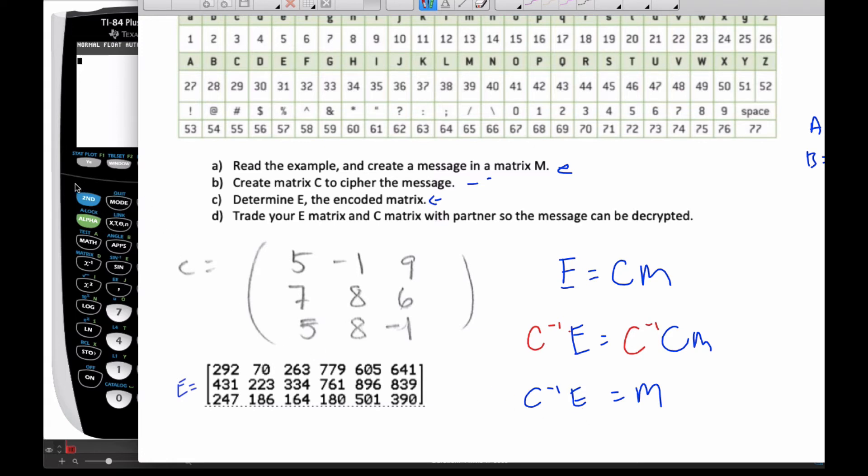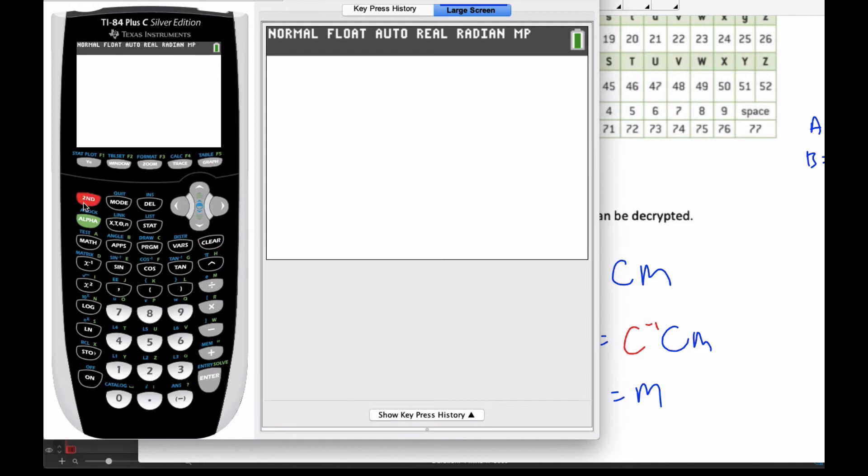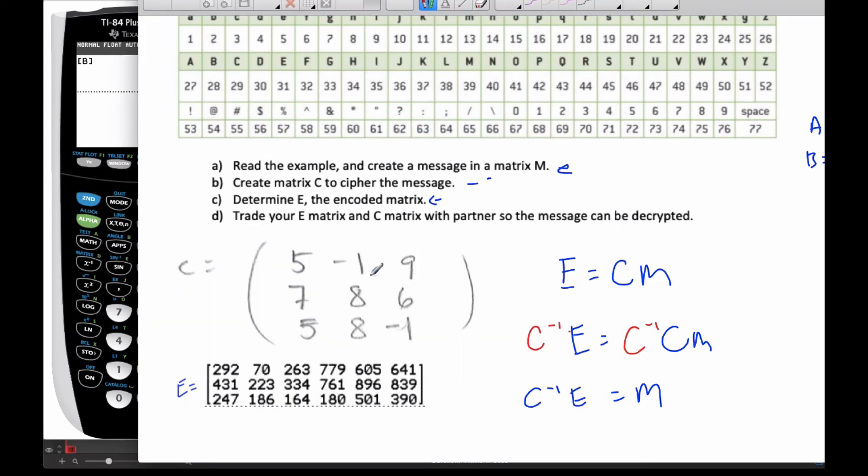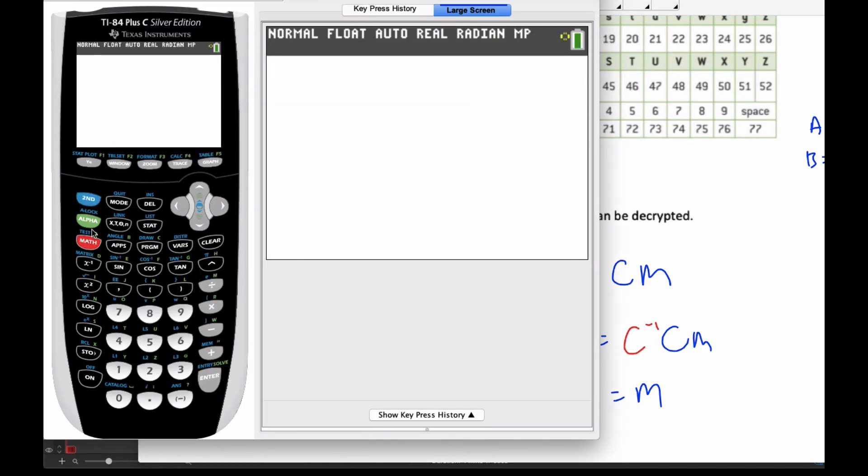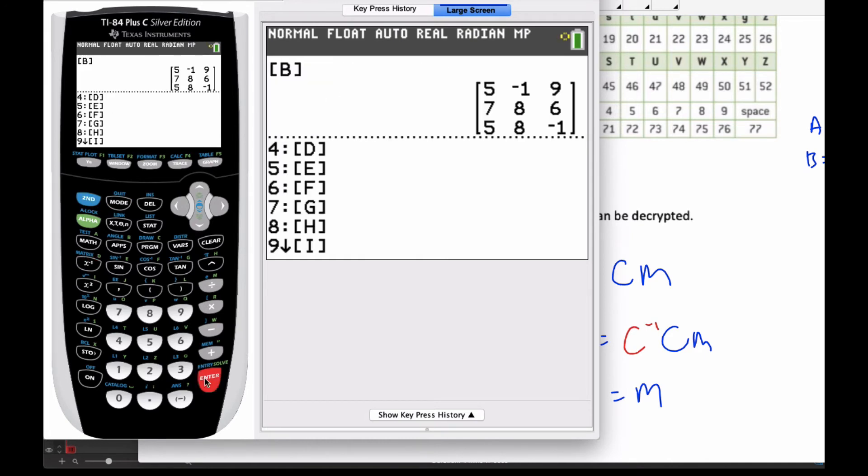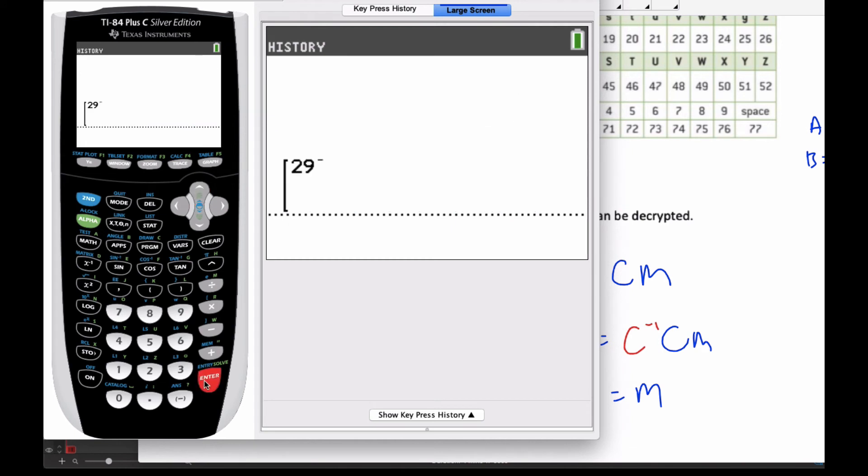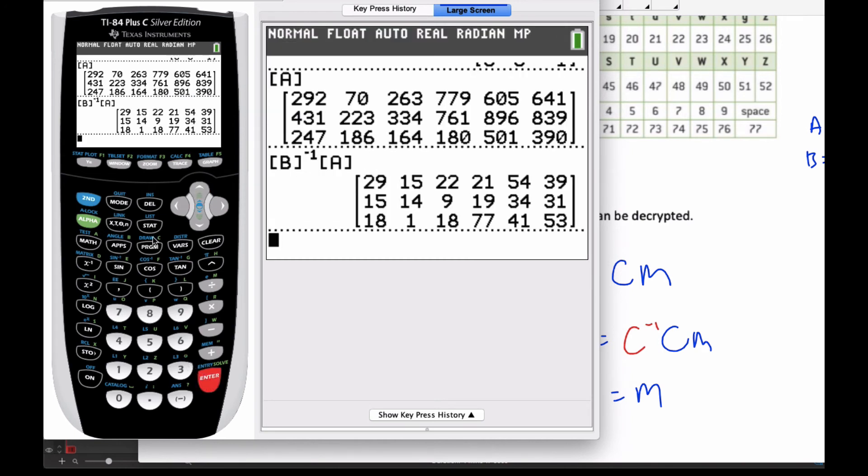If I go to my calculator here, I've already taken the liberty to put in my matrix. In B is my cipher, and you can see that's my cipher there. And in matrix A is my encoded matrix. So now in order to do it, I'm going to go to matrix C, inverse it, and I'm going to multiply it times matrix A, which is my E, my encoded matrix. And I come up with this value here.